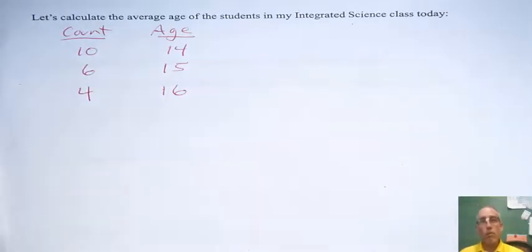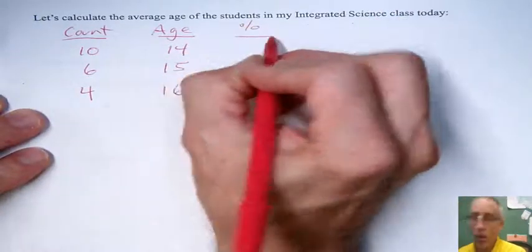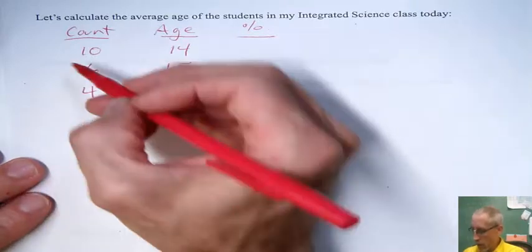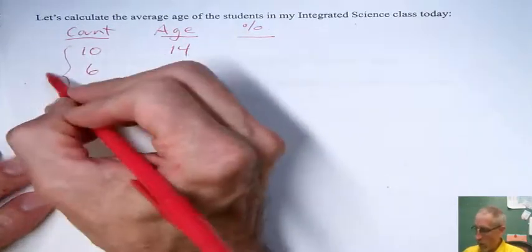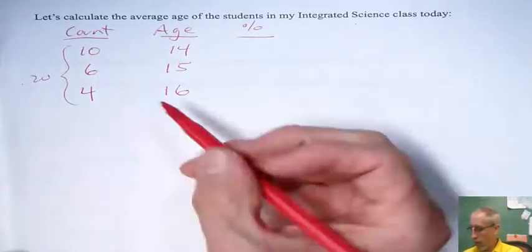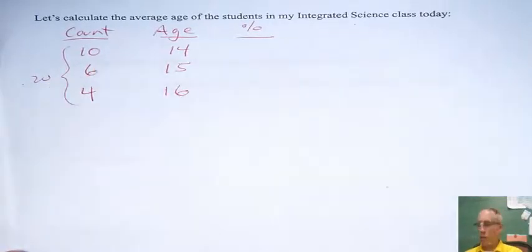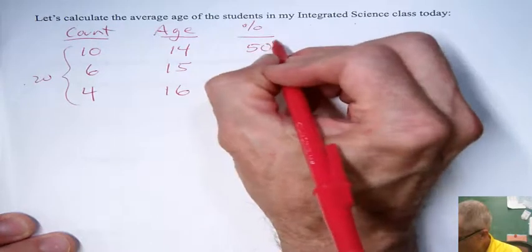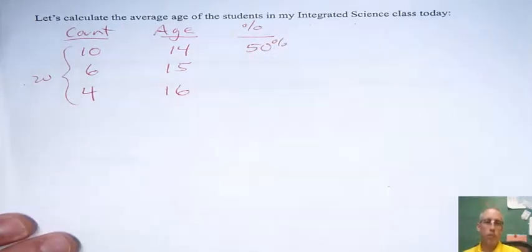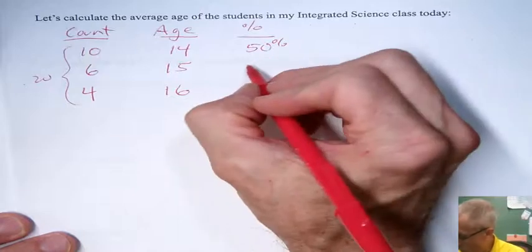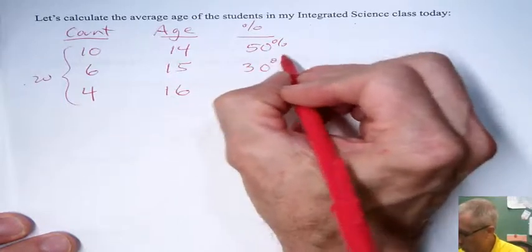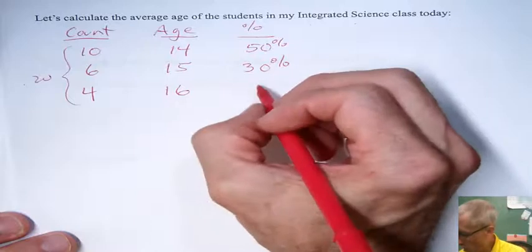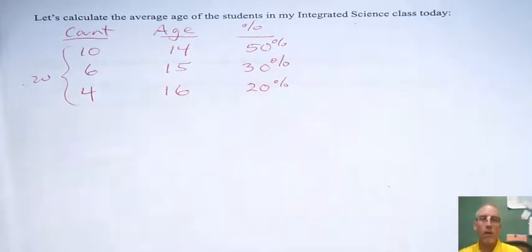To make it similar to how we calculate the atomic mass, we need to figure out what percent of the students are each age. So I'm going to make another column here for the percent. We have a total of 20 students. If 10 out of the 20 are 14 years old, that means 50%. If 6 out of 20 students are 15, that's another 30%. And 4 of the 20, or 20%, are age 16.